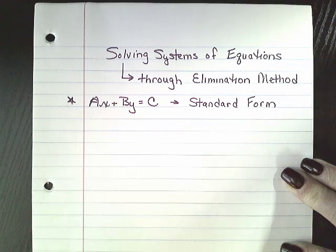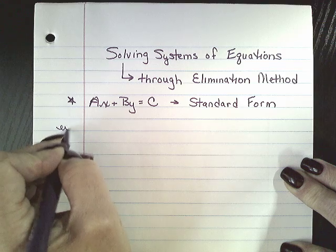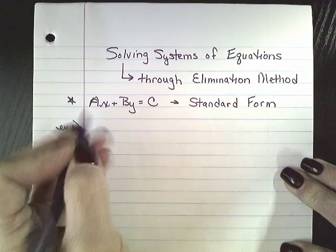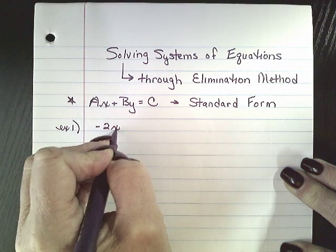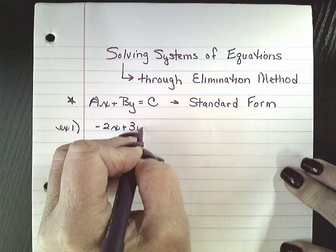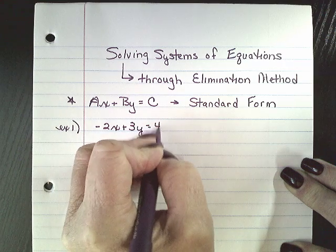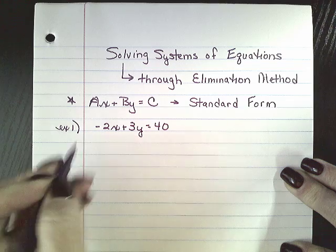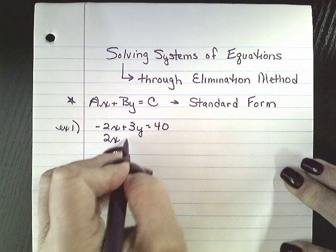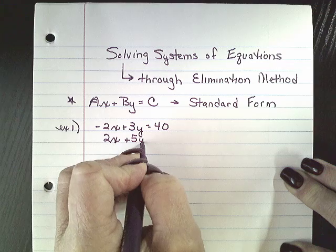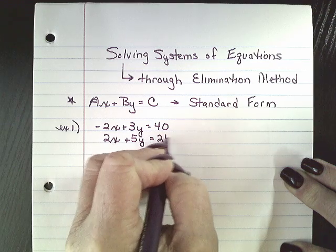Okay, we're going to jump in with two examples and then I'm going to write out the steps. So example one, we have negative 2x plus 3y is equal to 40, and then we have positive 2x plus 5y is equal to 24.